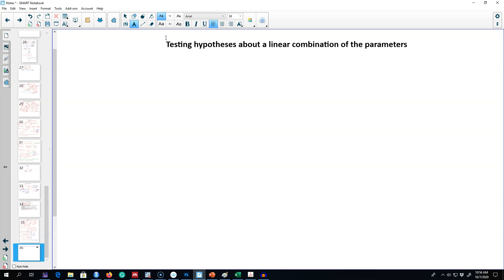Previously, we were talking about hypothesis testing about a single beta_j. Now we may be interested in a hypothesis like whether beta_1 is equal to beta_2.